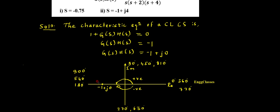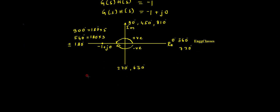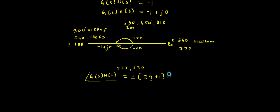Minus 1, as I said, if I move in anti-clockwise direction the angles are taken as positive, and other way around as negative. So this 180 degree could be positive or minus 180 degree. 540 can be written as 180 × 3, and 900 degree is 180 × 5, and so on. So ultimately the angle of G(s)H(s) can be written as ±(2q+1) × 180 degrees.